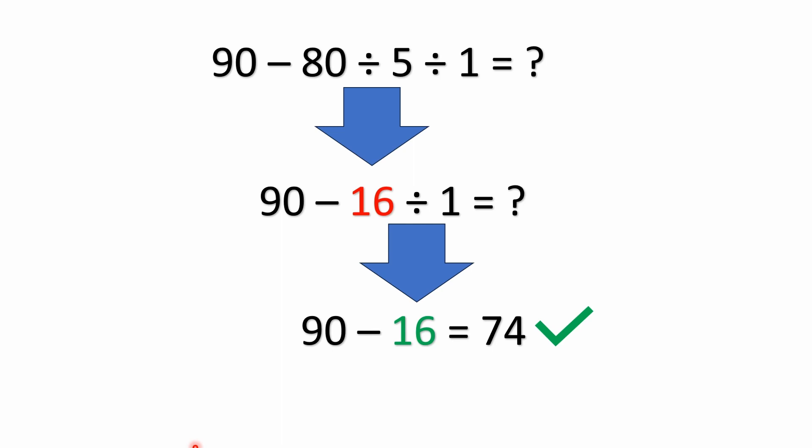Well, we don't have any parentheses, exponents, or multiplication to look at, but we do have division. So we go ahead and do the division first. 80 divided by 5 is 16, which we have right down here.